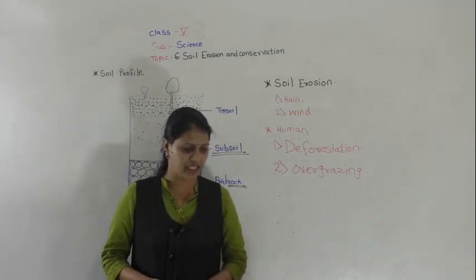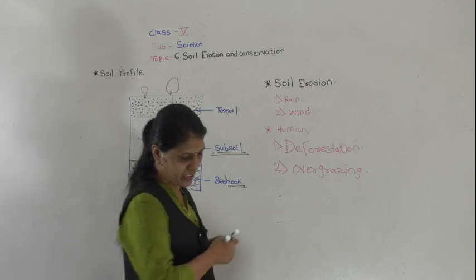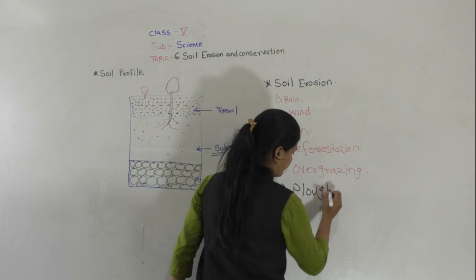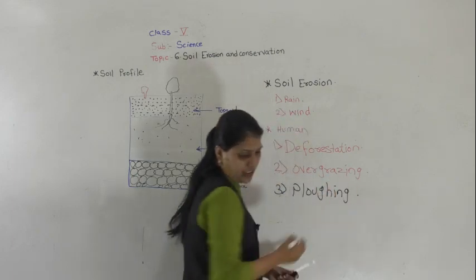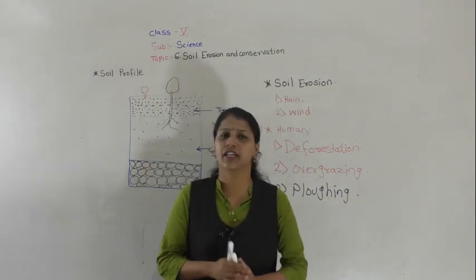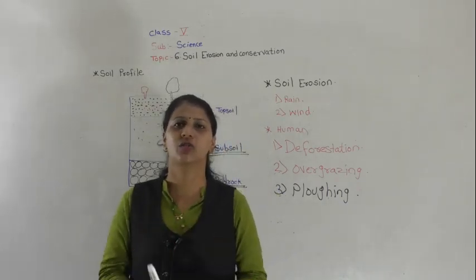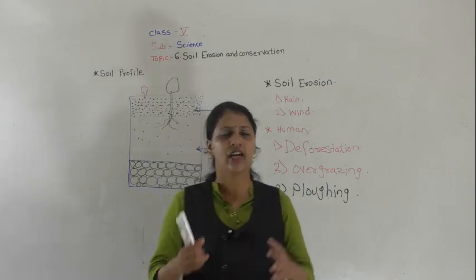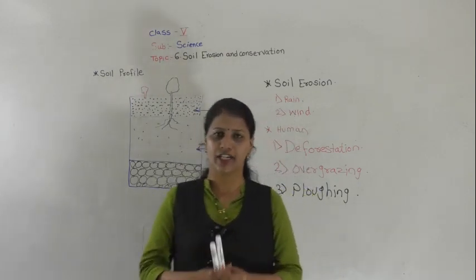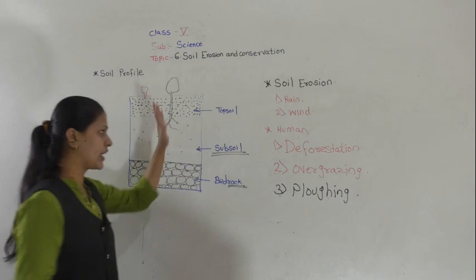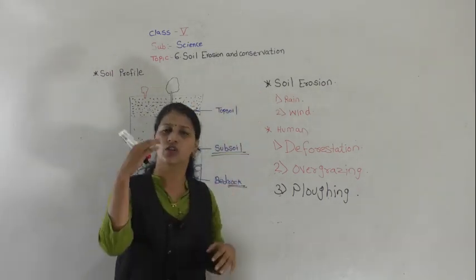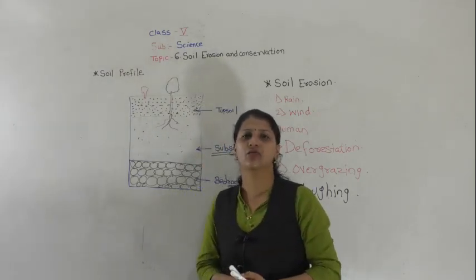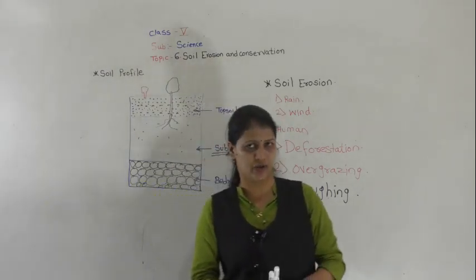The next factor is ploughing. Ploughing is also one of the factors responsible for soil erosion. So to summarize today's lesson: we covered soil profile, soil erosion, its causes, and the factors responsible for it.